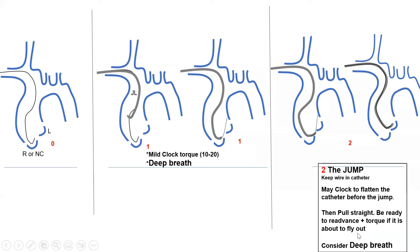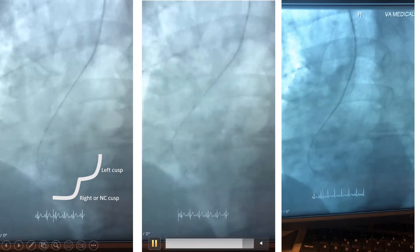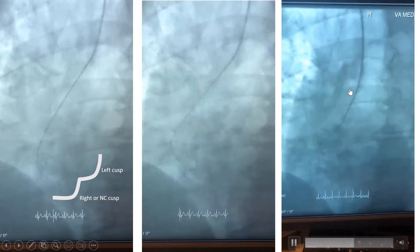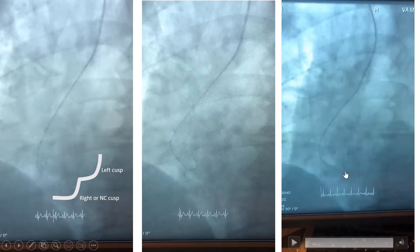Deep breath works very well for the jump. It elongates the aorta, elongates the right and left cusps, and makes them more level with each other, making the jump easier. And here is a case illustration: we did it with a deep breath and a slight clockwise torque. Look how nicely the catheter came down to the right cusp, looking in the proper direction. Then all you have to do is make it jump.